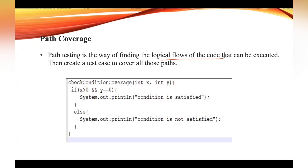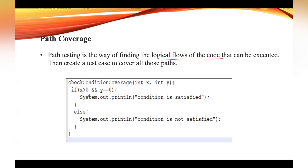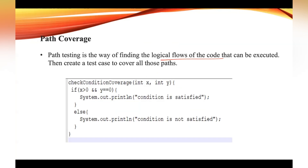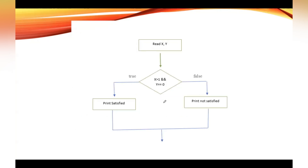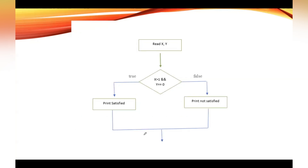Let us take this example and try to draw a flowchart for it. Here we have two variables, x and y. First we need to read the values of x and y. The condition here is: x greater than 0 and y equal to 0. If that condition is true, print 'condition is satisfied.' If the condition is false, print 'condition is not satisfied.'